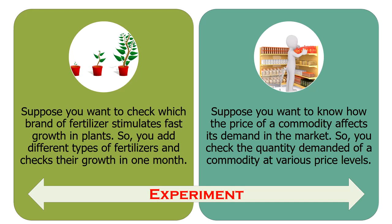Now we will go through some experiments. Experiment 1: Suppose you want to know which brand of fertilizer stimulates fast growth in plants, so you add different types of fertilizers and check their growth in a month. Here the independent variable is the fertilizer added, which is being changed by the experimenter during the experiment, and the dependent variable would be the plant height, which is being observed and recorded.